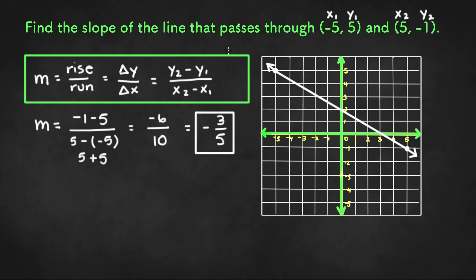So we can try to check our work using the graph over here. So essentially we're saying we're going down 3 units and right 5 units. And we hit a point.